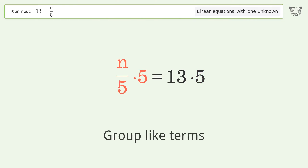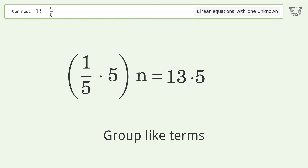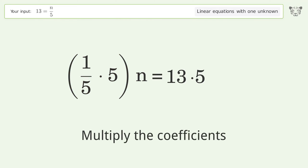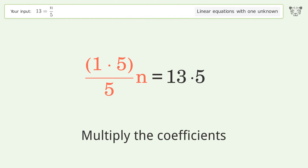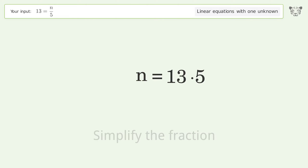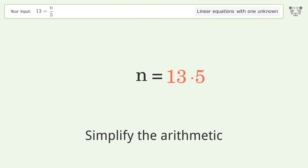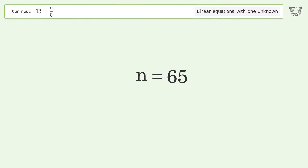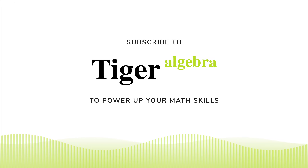Isolate the n — multiply both sides by 5. Group like terms. Multiply the coefficients. Simplify the fraction. Simplify the arithmetic. And so the final result is n equals 65.